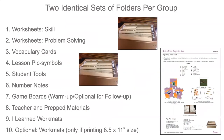Once you have your 20 file folders, divide them into two sets of 10. Label both sets with the heading seen here, or use the organizational guide within the overview manual. The file folders are labeled as follows: skill worksheets, problem-solving worksheets, vocabulary cards, lesson-pick symbols, student tools, number notes, game boards, teacher prep materials, I-learned workmats, and optional workmats.